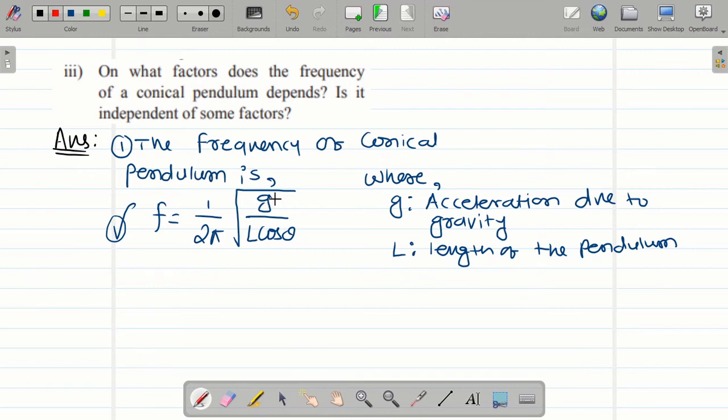In this formula you can see: frequency depends on the acceleration due to gravity g, L is the length of the pendulum, and theta is the angle at which it is making with respect to vertical.